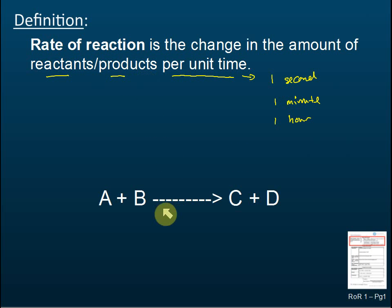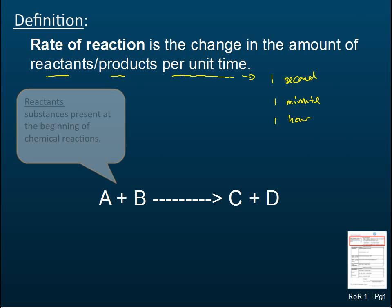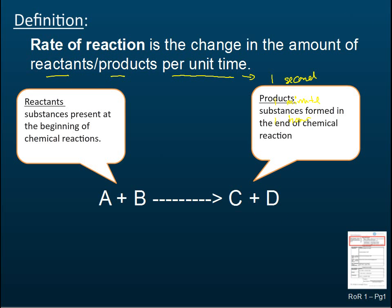Let's do some revision on reactants and products. If there's a reaction between A and B producing C and D, then A and B are called the reactants — the substances present at the beginning of the chemical reaction — and C and D are called the products.